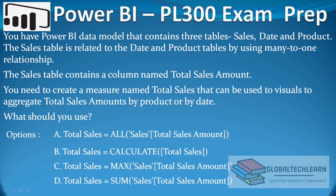Option C tries to calculate the MAX of Total Sales Amount, which also will not work. The final option D uses the SUM function, which is the correct choice for aggregating the Total Sales Amount.